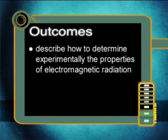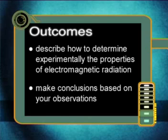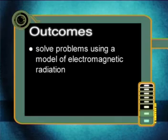In this lesson, we will explore what electromagnetic radiation is. We will conduct practical investigations of its properties and examine a model scientists use to describe it. By the end of this lesson, you should be able to describe how to determine experimentally the properties of electromagnetic radiation, make conclusions about the properties of electromagnetic radiation based on your observations, and solve problems using a model of electromagnetic radiation.